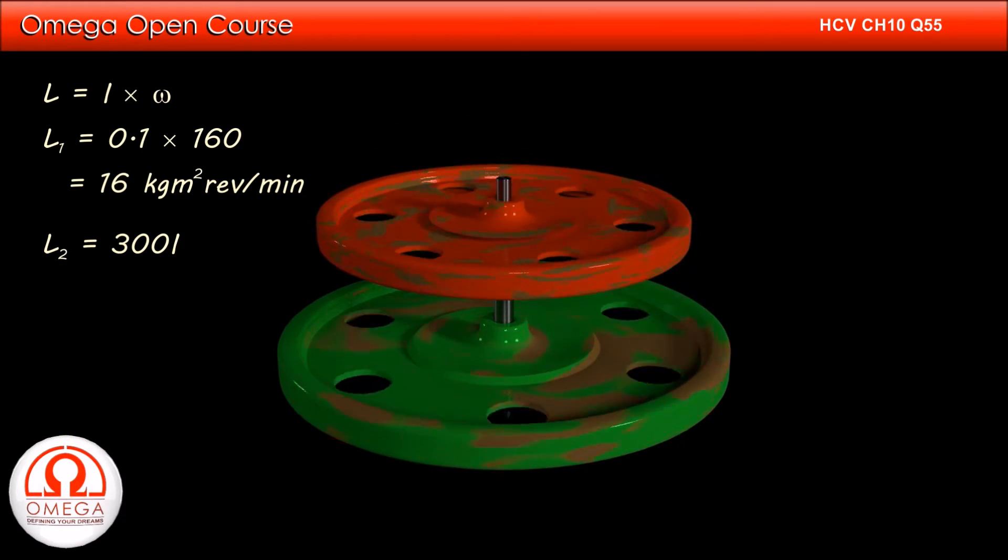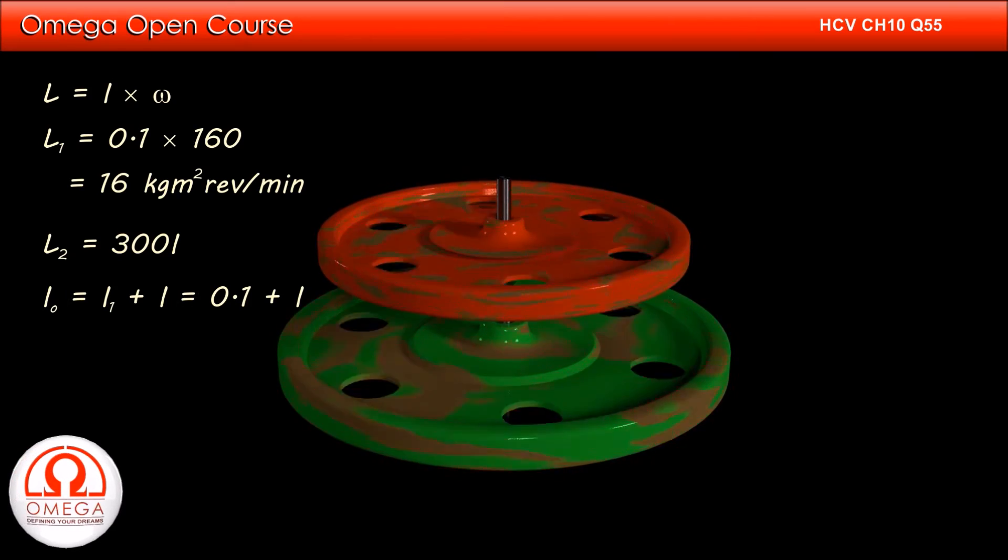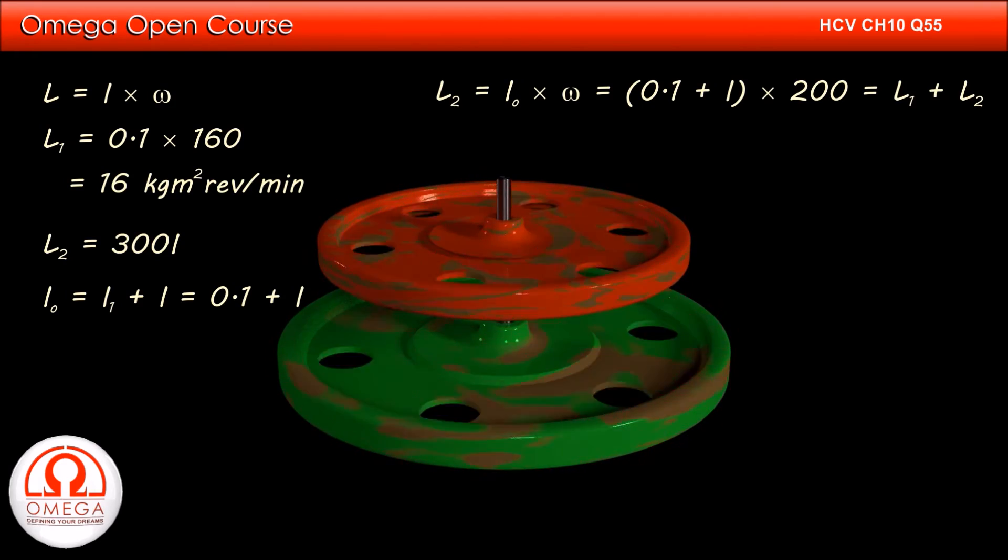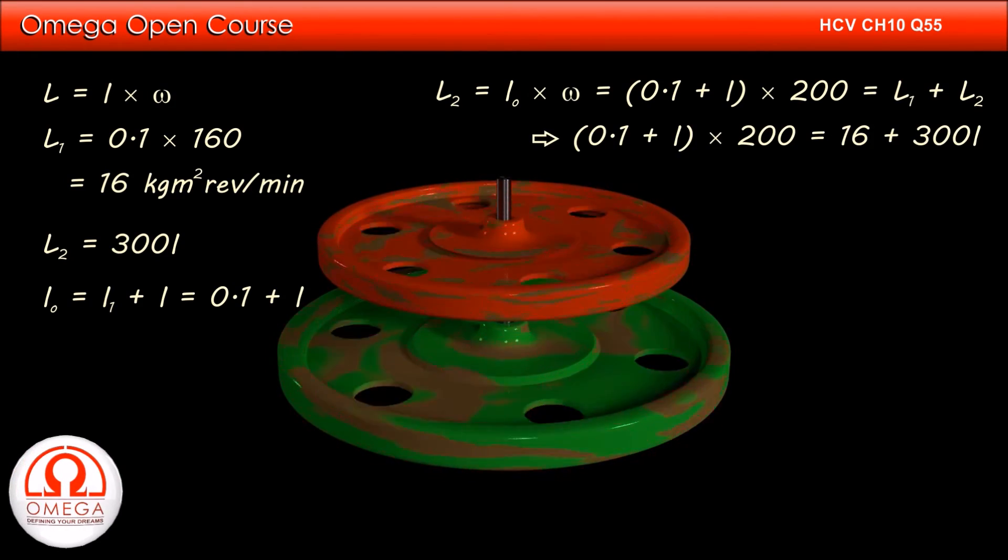When both the wheels are coupled together, their combined moment of inertia is 0.1 plus i. Thus, the final angular momentum is 0.1 plus i into 200 which must be equal to the initial angular momentum of the system, i.e., 16 plus 300i.